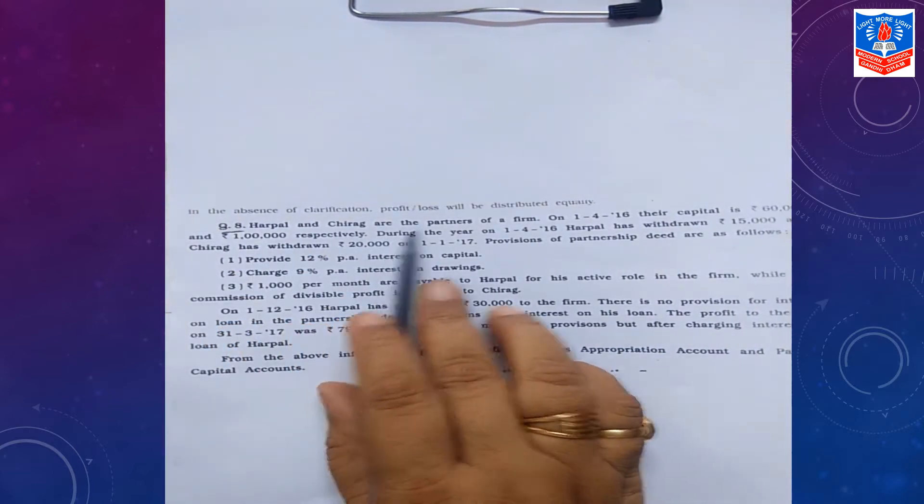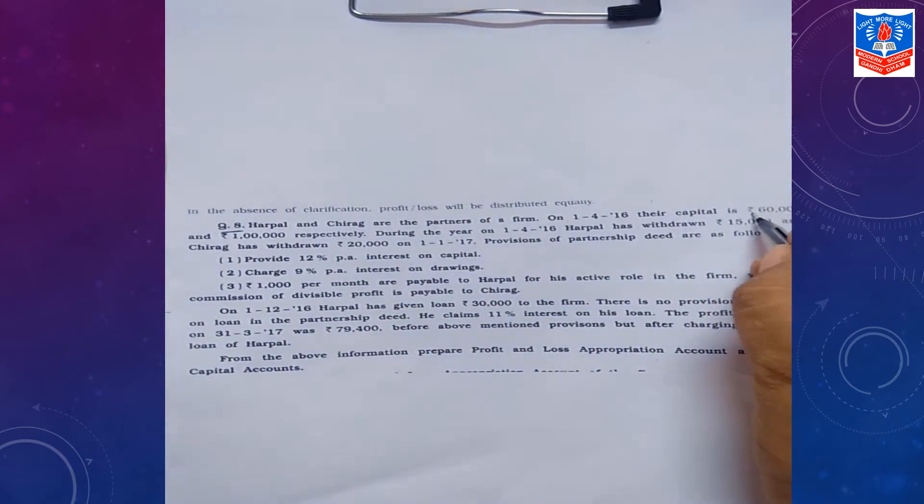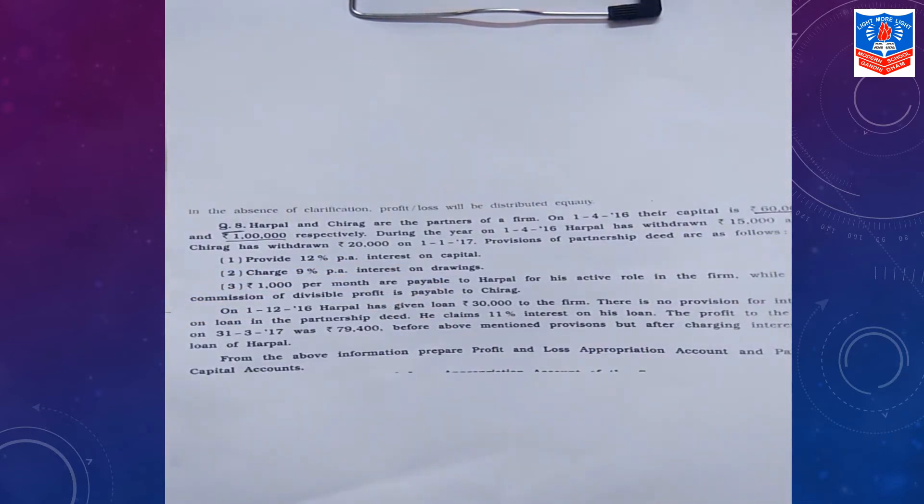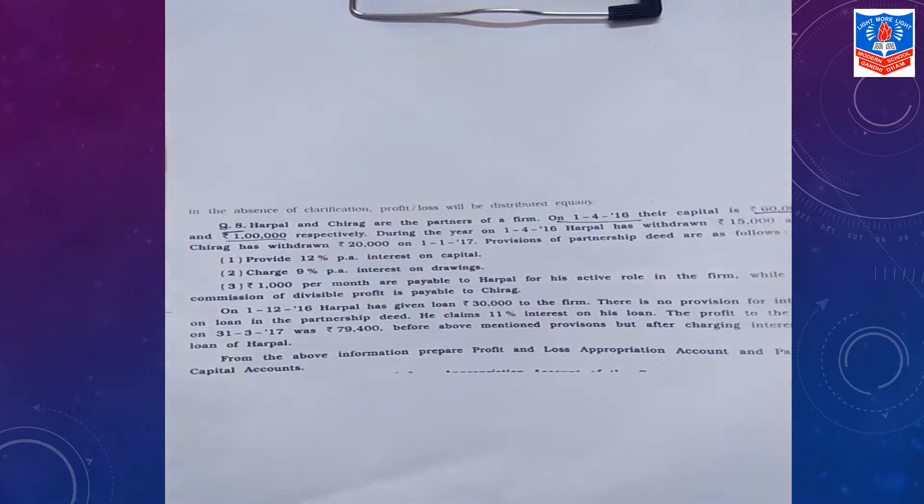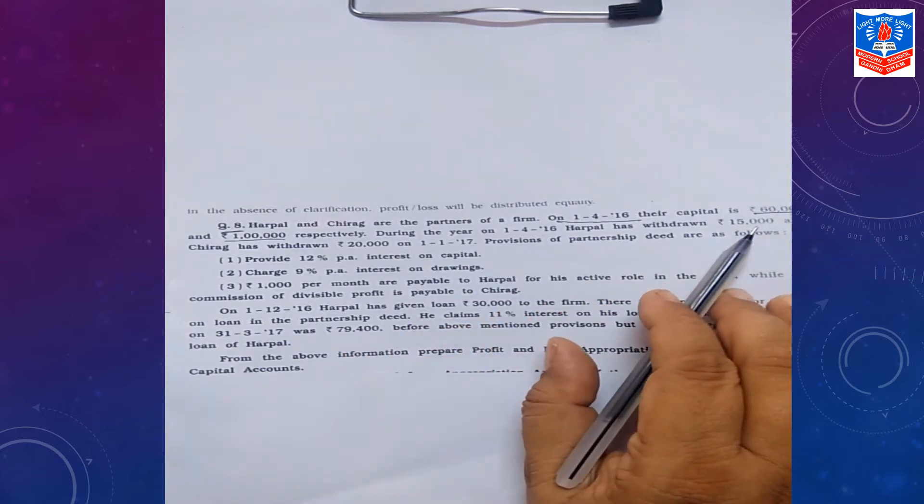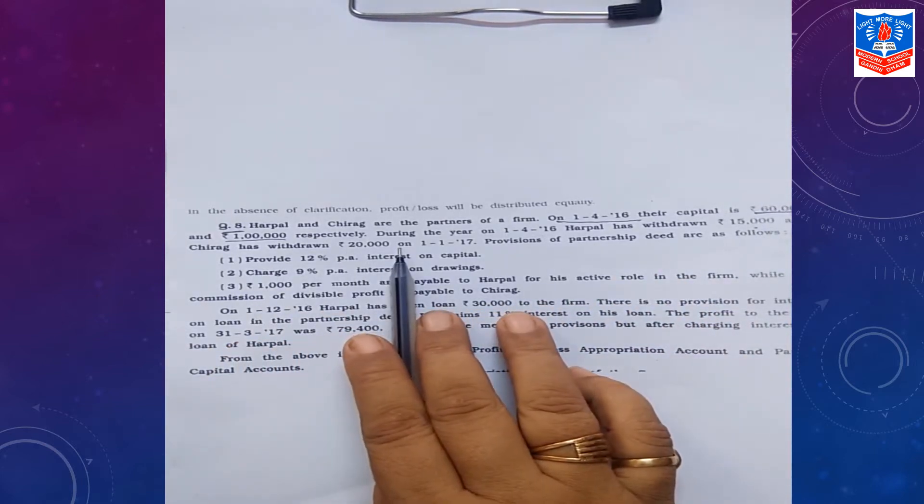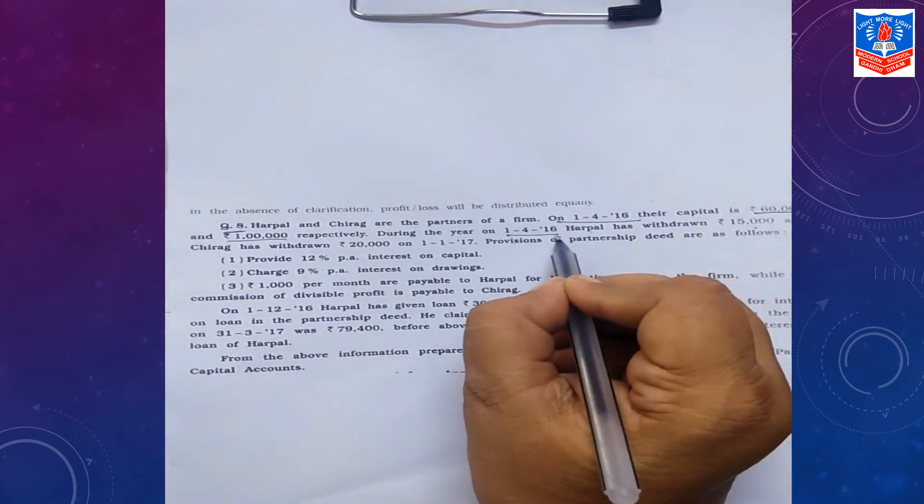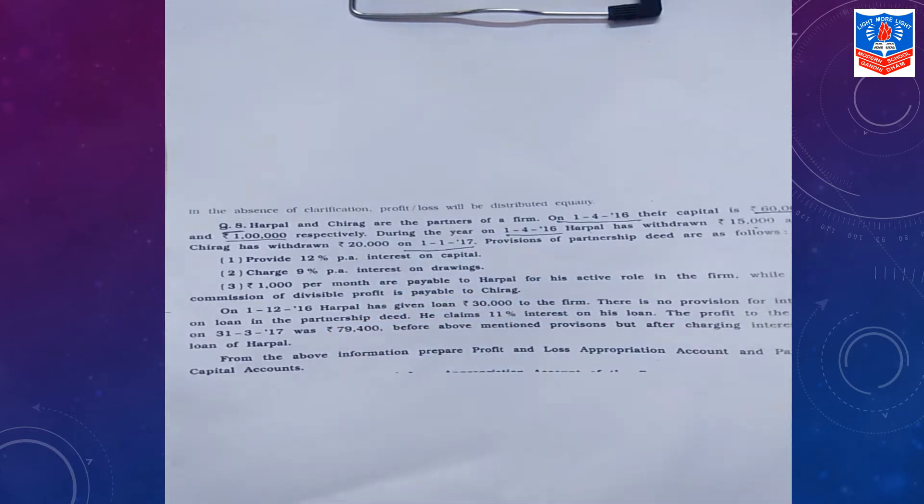Harpal and Chirag are partners of a firm and their capital is given to you Rs. 60,000 and Rs. 1,00,000 respectively which we will take to their capital account as an opening balance because this capital is on 1st April 2016. Then during the year, Harpal has withdrawn 15,000 and Chirag has withdrawn 20,000 on 1st January 2017. Harpal has taken drawings on the first date of the year and Chirag has withdrawn on 1st January 2017.